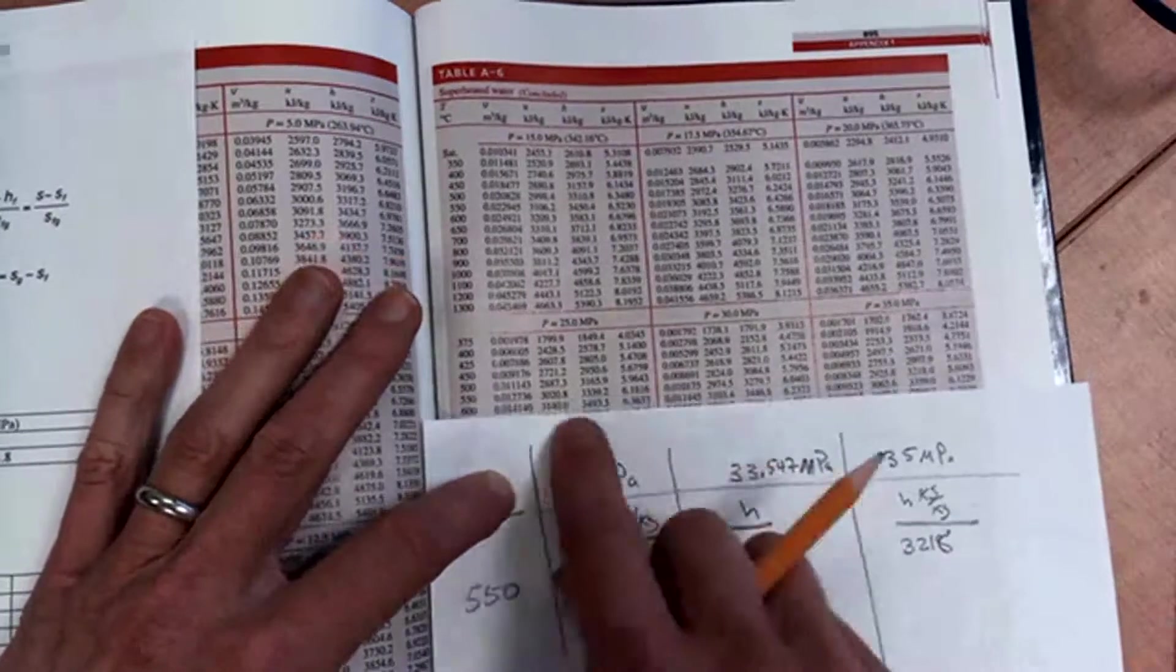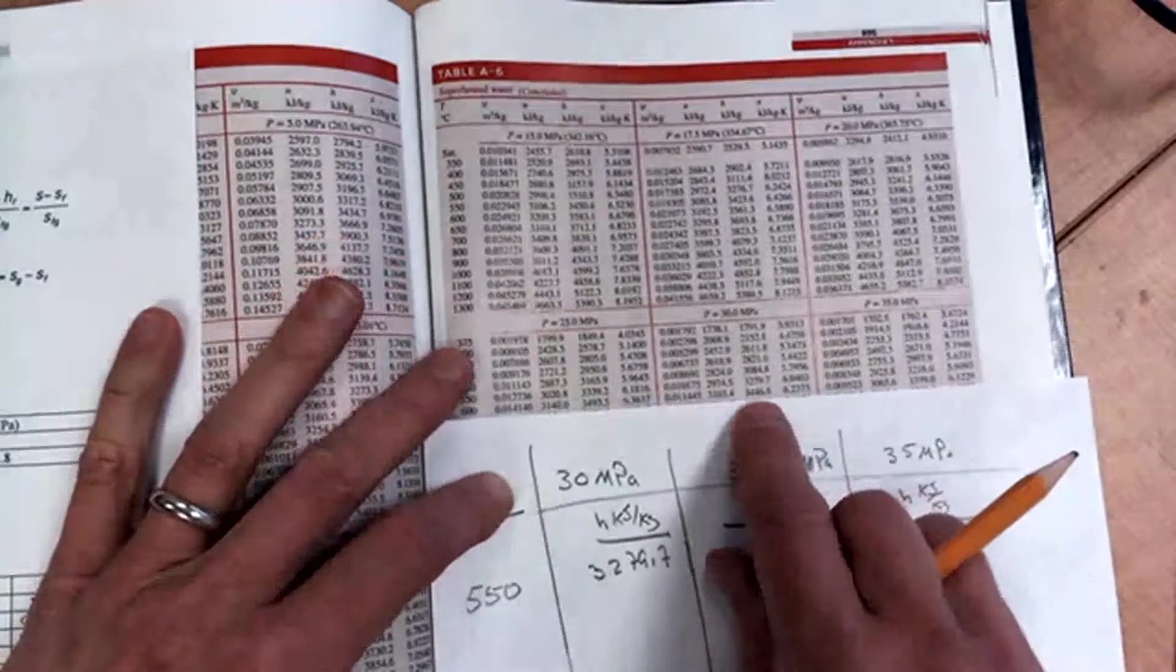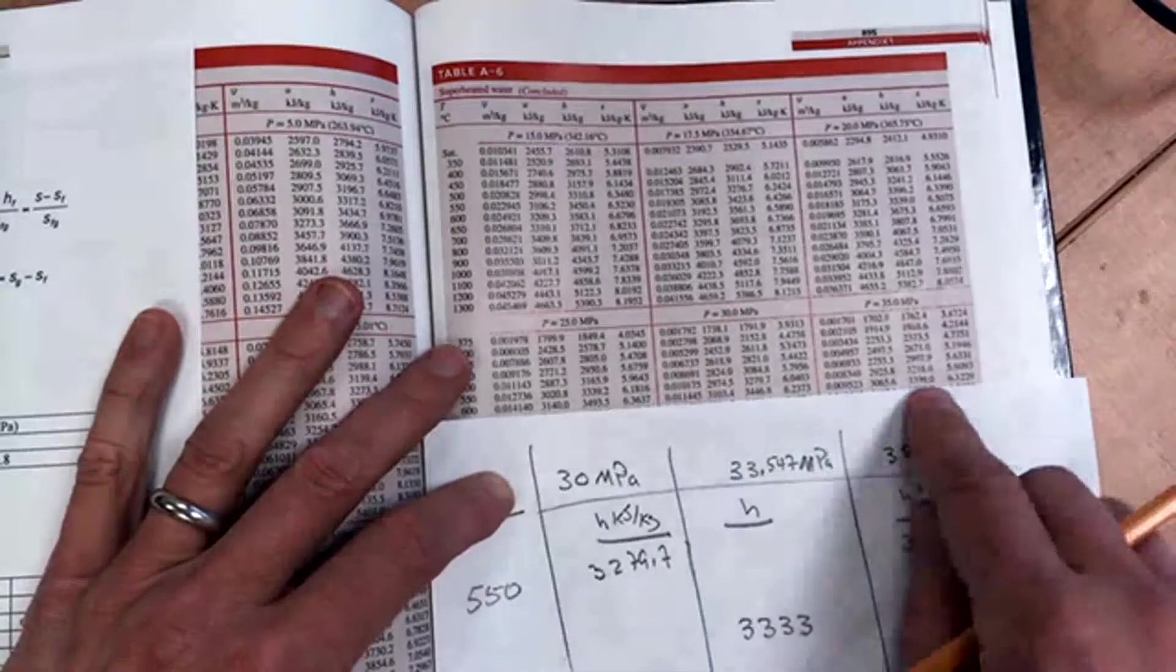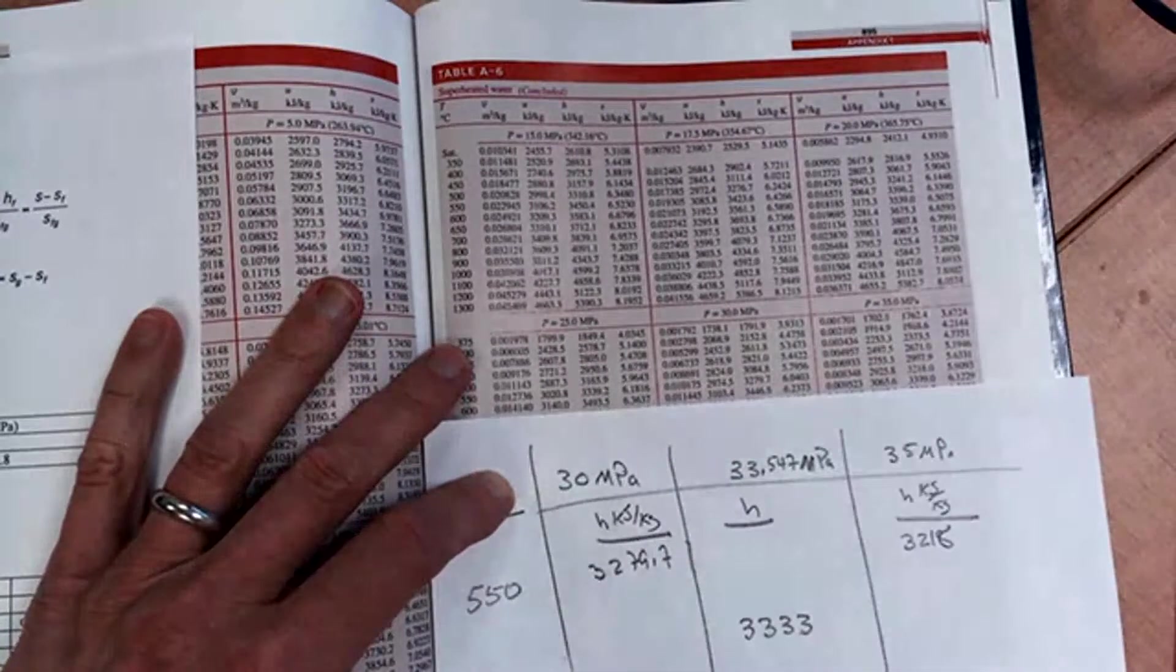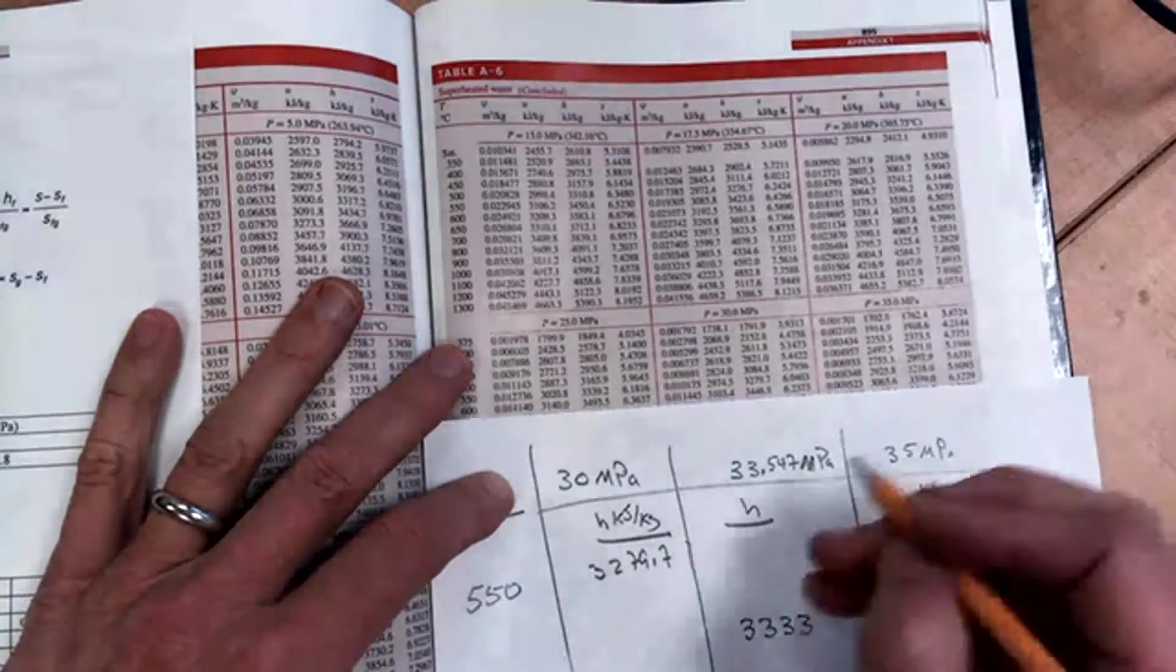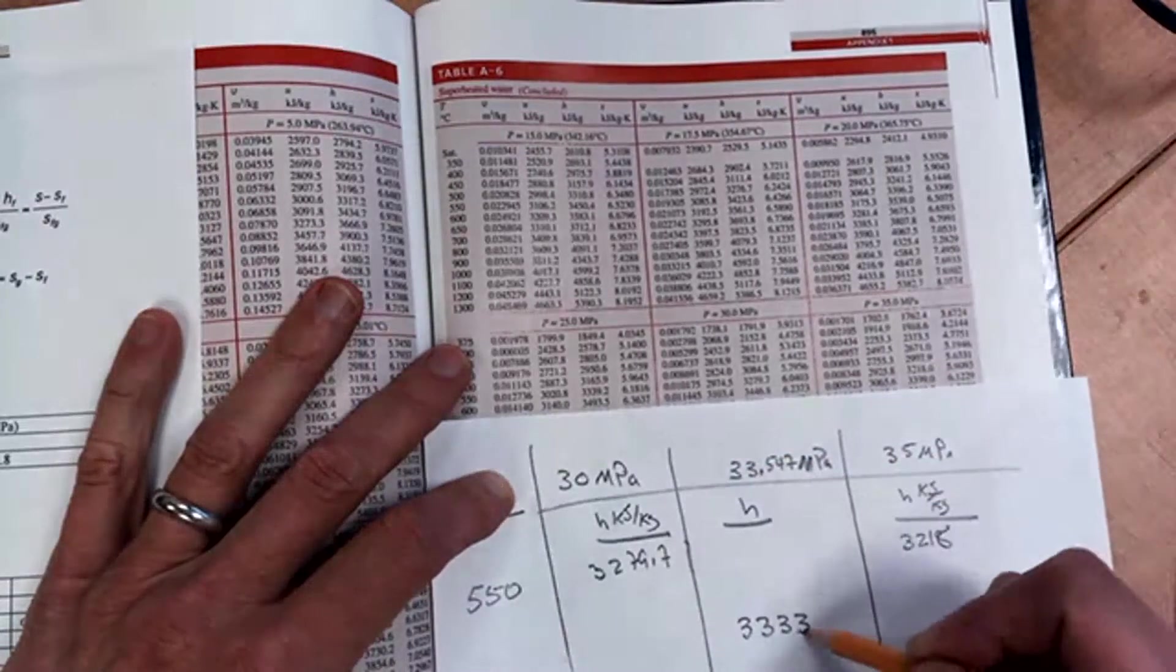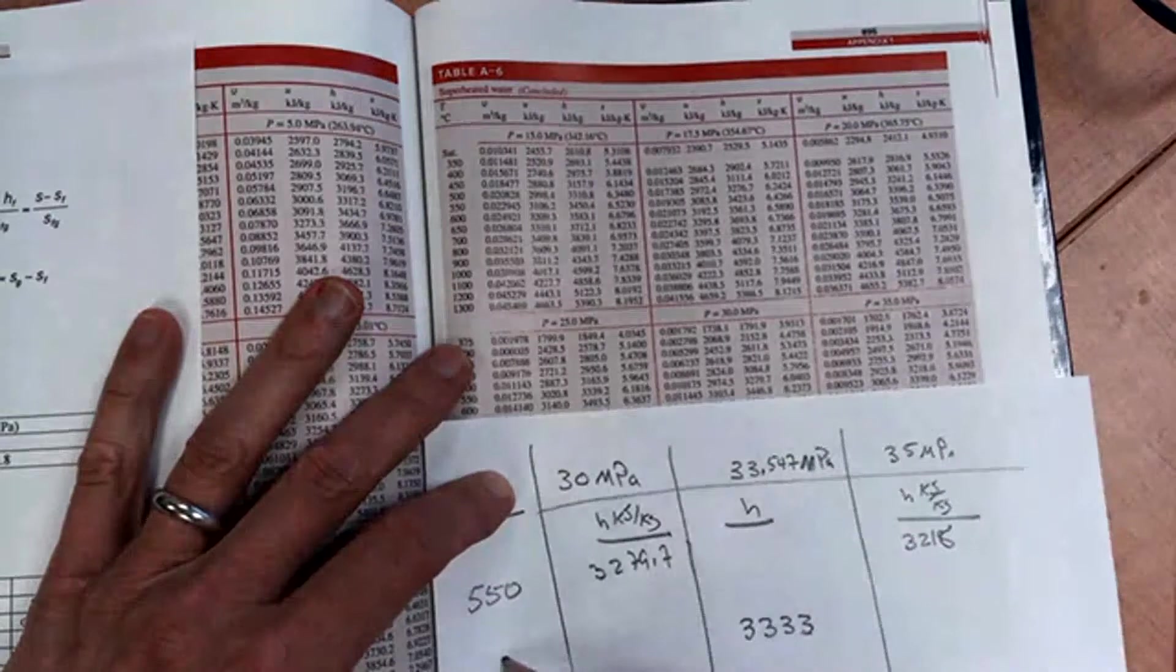And then at 600 Celsius, I copied the H value to be 3,446.8, and 3,399. Put it there. So I was given this pressure and this enthalpy, and I'd like to know the temperature.